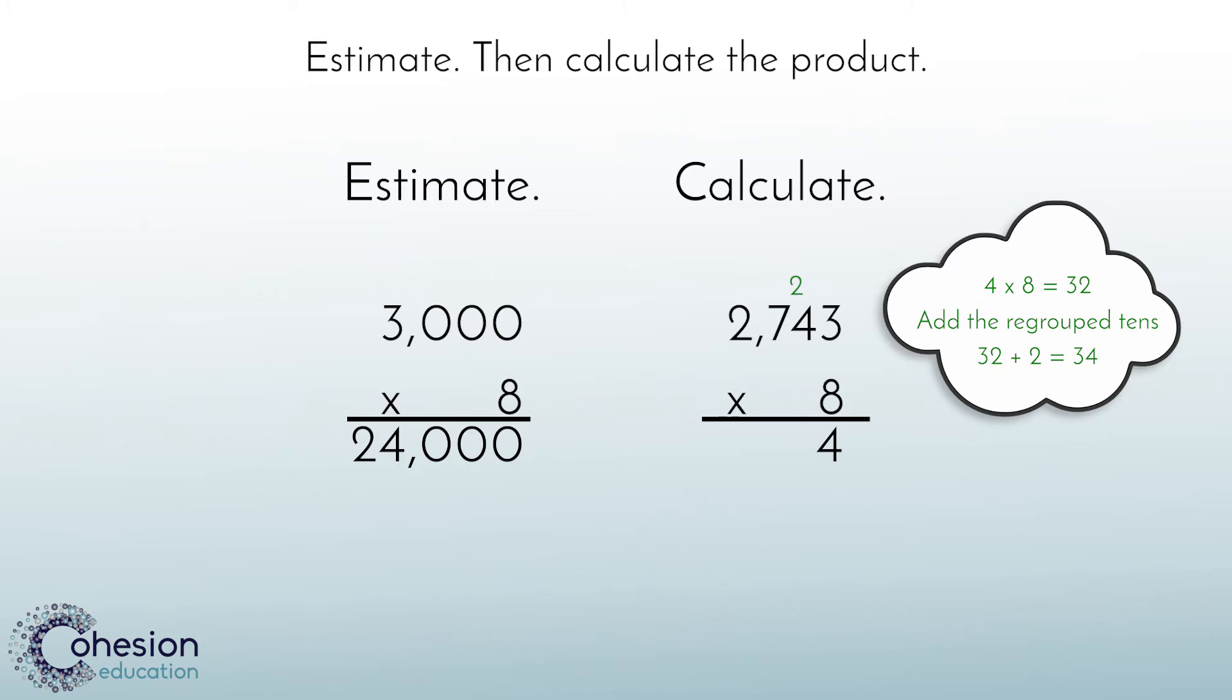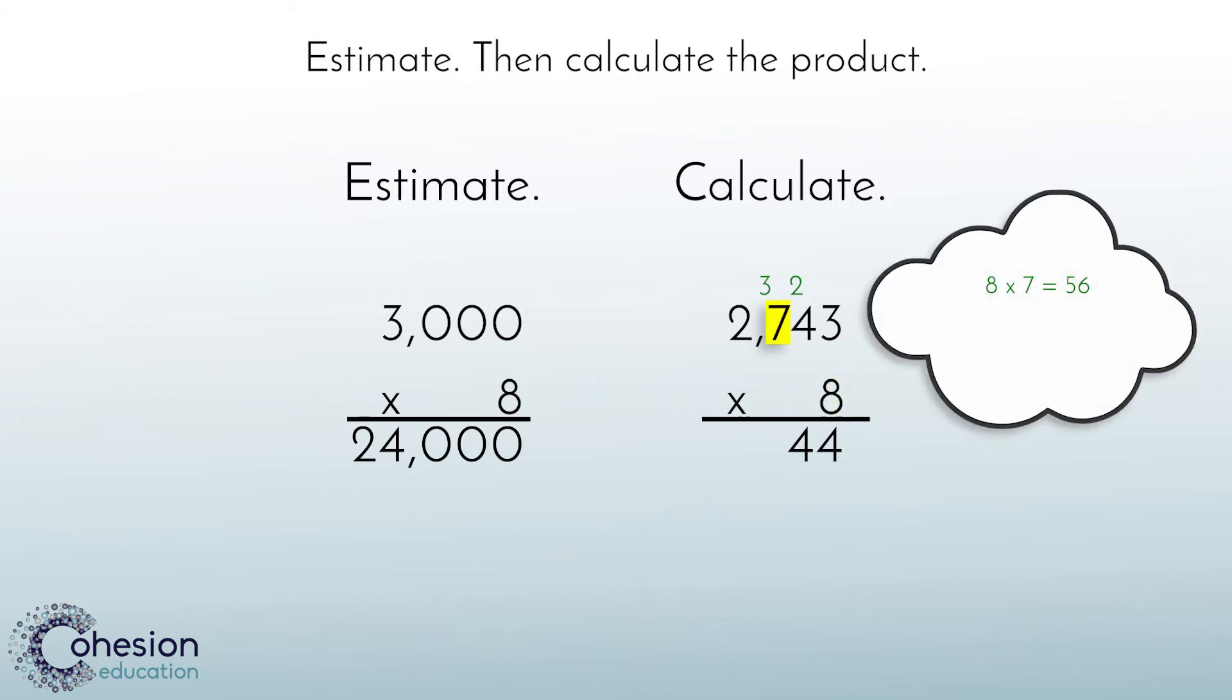We will need to write the 4 in the tens place and regroup the 3 hundreds. The next step is to multiply the hundreds. We know from our basic fact that 8 times 7 is 56. Remember, before we move on, we will have to add the 3 regrouped hundreds to 56, making it 59. We will write the 9 in the hundreds place in our answer and regroup the 5 thousands.